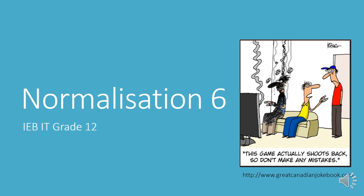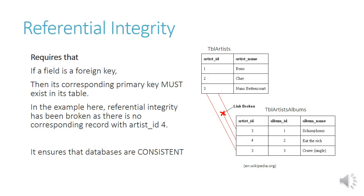Normalization 6, IBIT grade 12. Referential integrity. For referential integrity to be maintained, it requires that if a field is a foreign key, then its corresponding primary key must exist in its table.